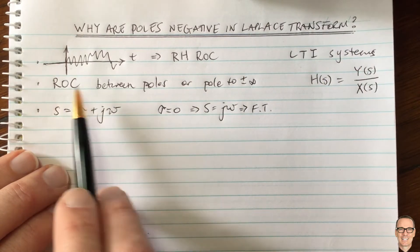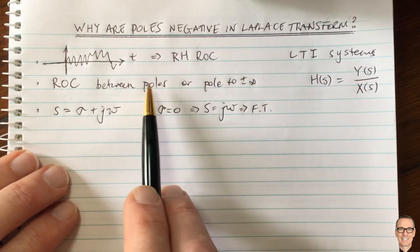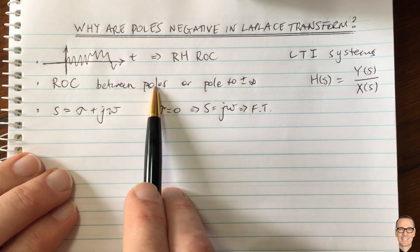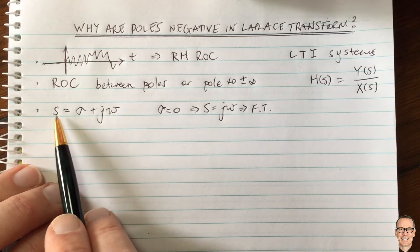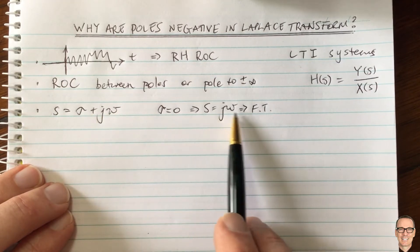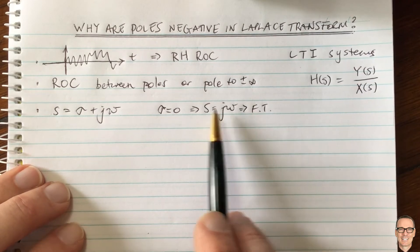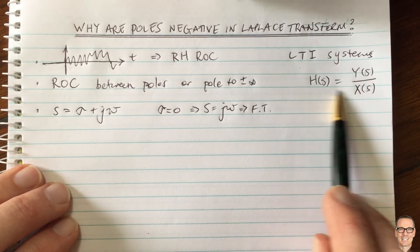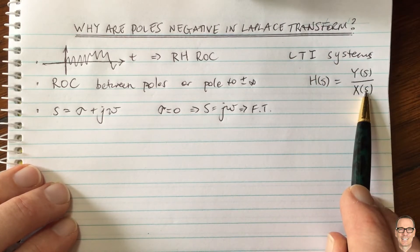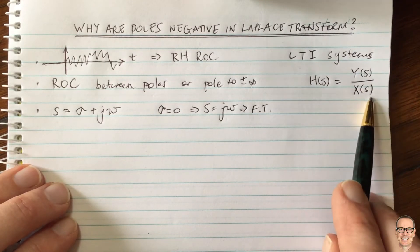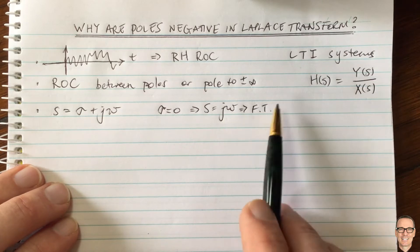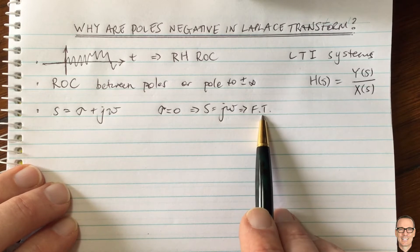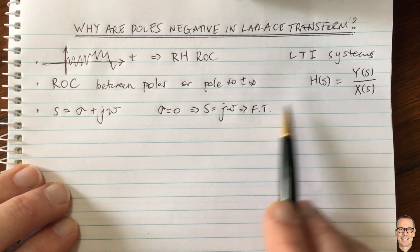Also, the region of convergence goes from a pole to infinity, so the right-hand half plane has to go from a pole to infinity. We're therefore interested in the location of the poles. The third point is that the Fourier transform exists along the jω axis in the Laplace transform. So for a linear time invariant system, if we want our system to be stable, we need the region of convergence to include the jω axis, so that the Fourier transform can be performed and we'll know it is a stable system.